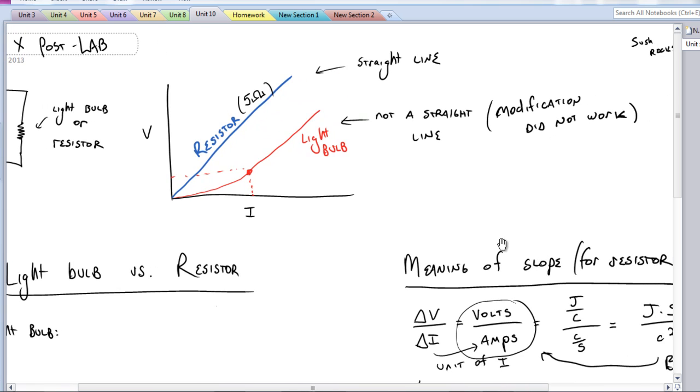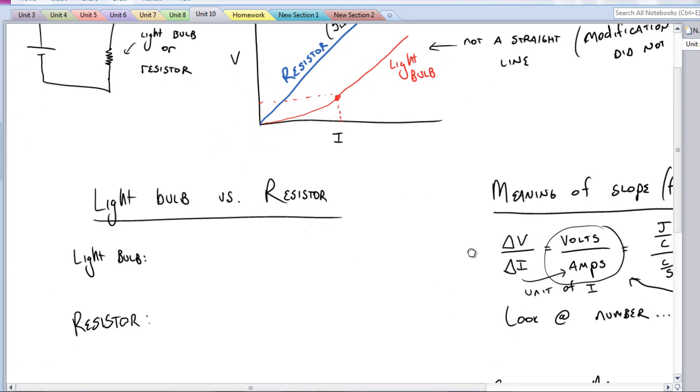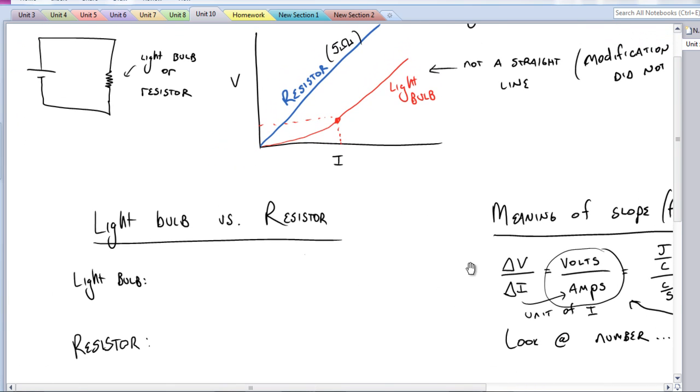Resistor was a straight line. The light bulb was not a straight line. And if you saw a little bit of a curve and you tried to modify it, you should have realized that the modification would not have worked. So let's talk about this piece alone. The first piece that you should realize is something's happening with that first part of that curve, and then it really becomes a straight line after that.